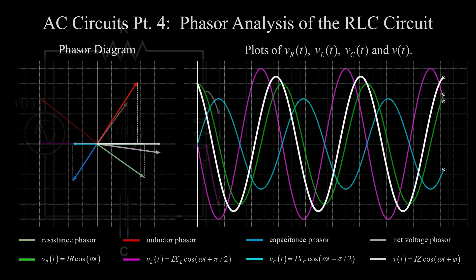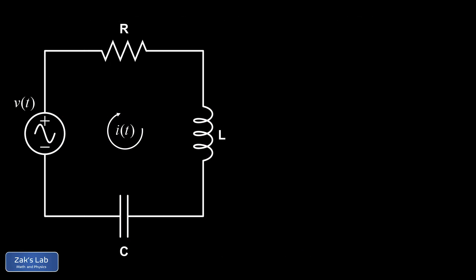There's our RLC series circuit with a sinusoidal voltage source and a sinusoidal current i(t) flowing through it. The main goal is to relate the net voltage of the power source to the current flowing in the circuit. This gives us two key results: first, an Ohm's law style relation between voltage amplitude and current amplitude, giving us the total effective resistance called impedance.